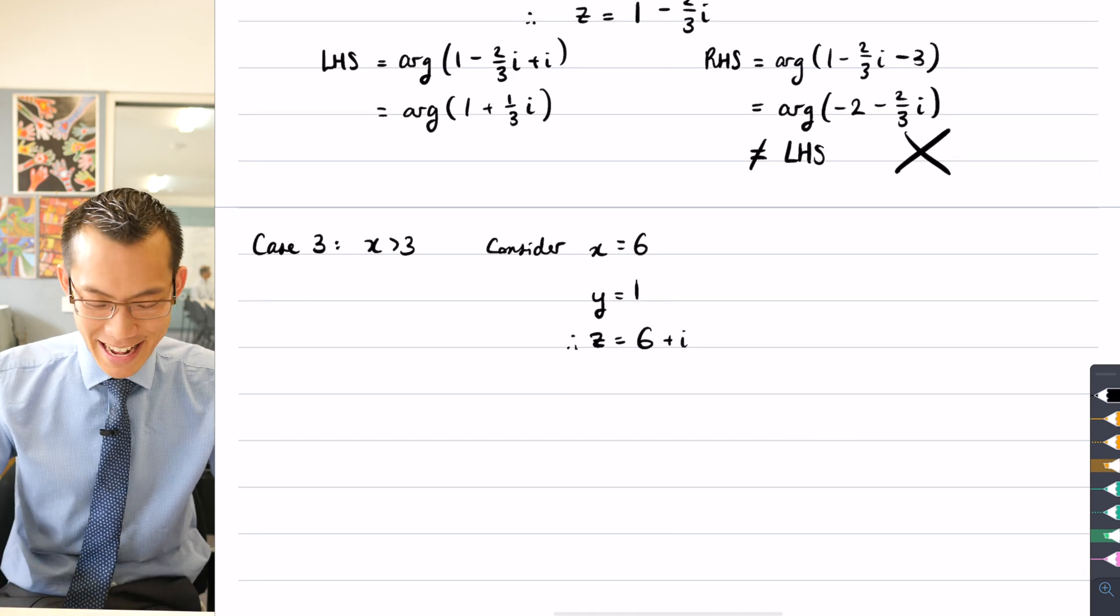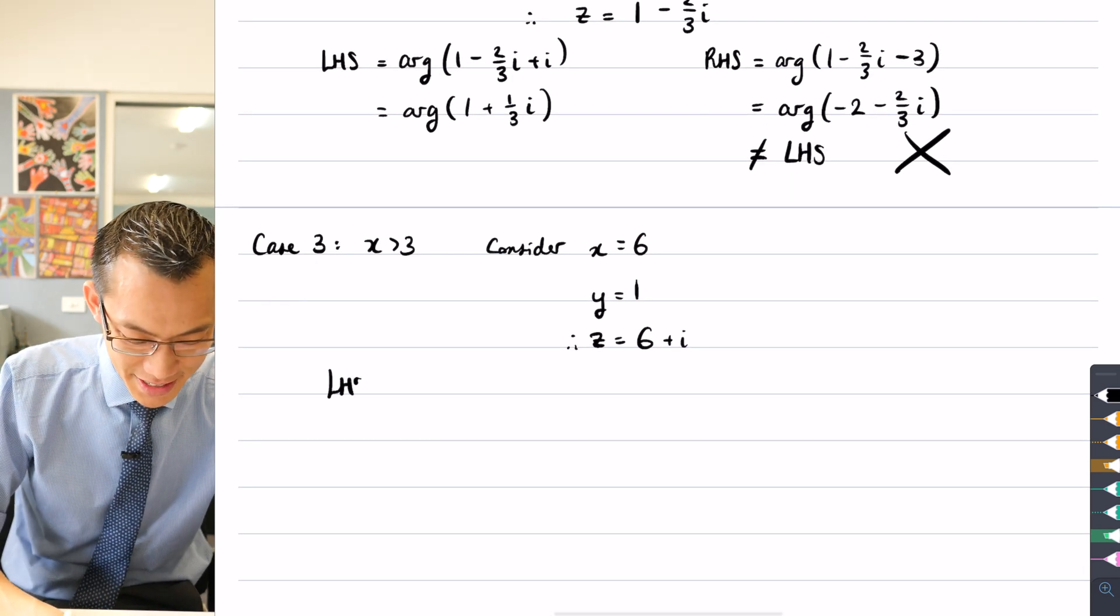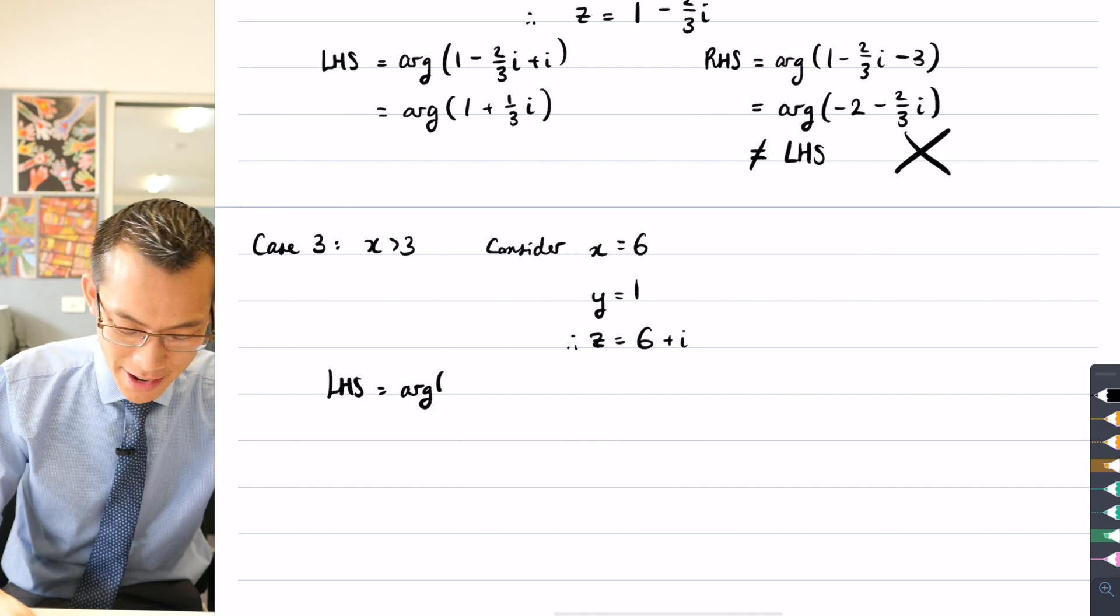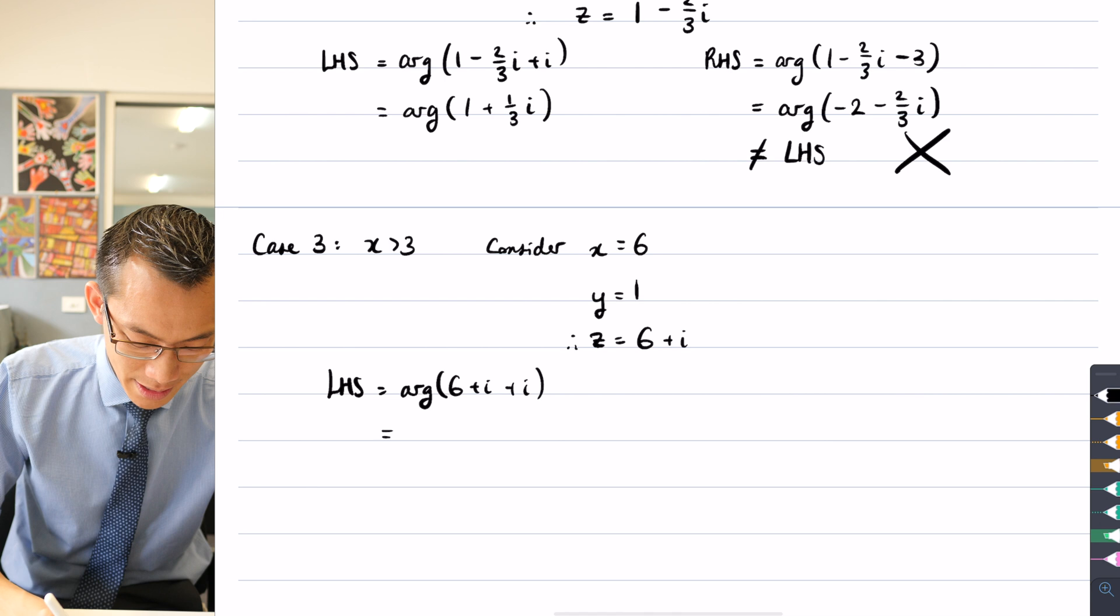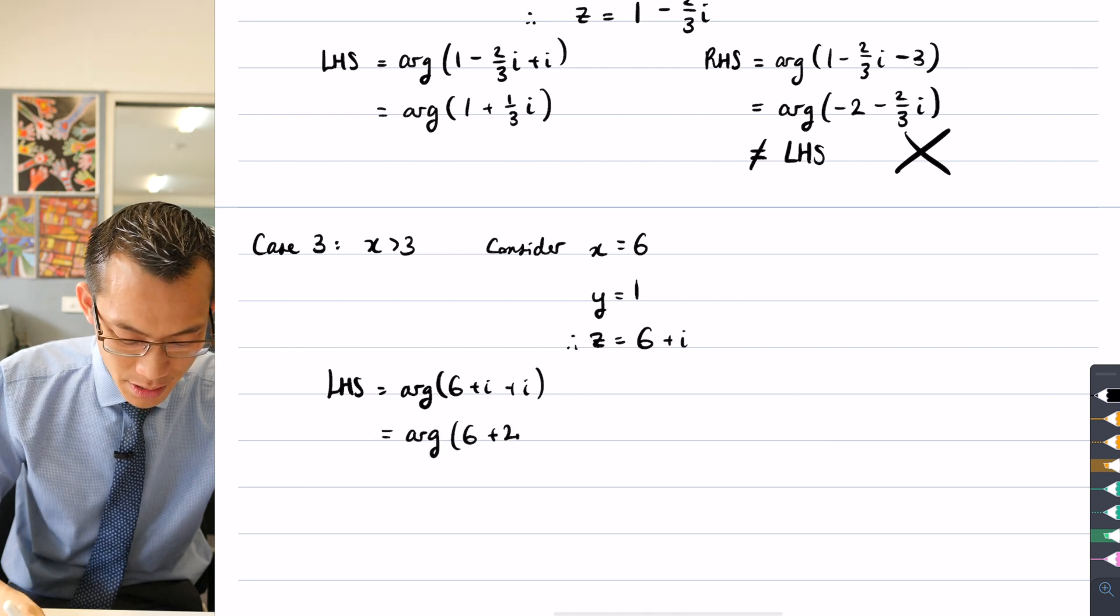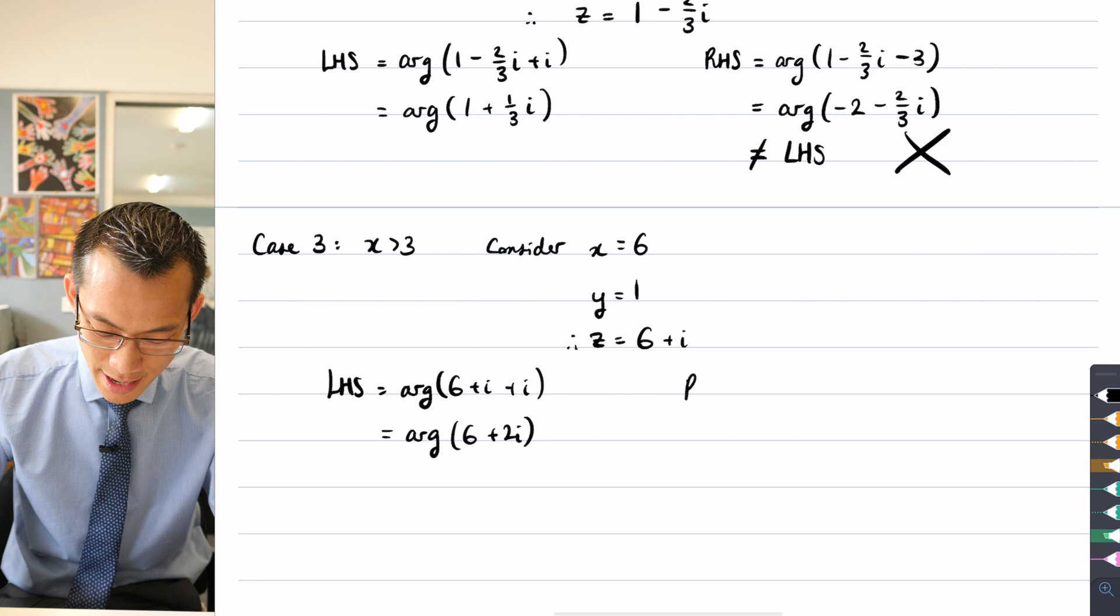So let's test it out once more with feeling. The left-hand side is going to be equal to arg of my complex number, which is six plus i. And then I'm going to add i. So I'm getting the argument of six plus two i. Check the right-hand side.